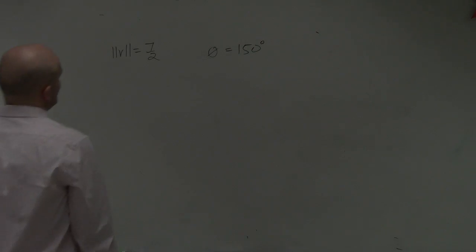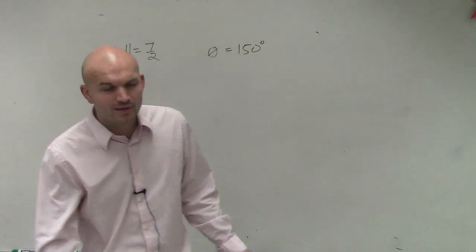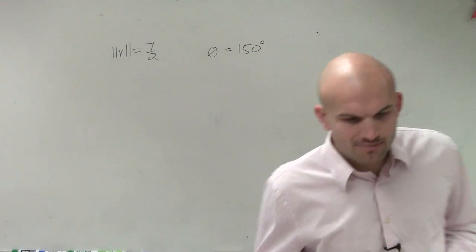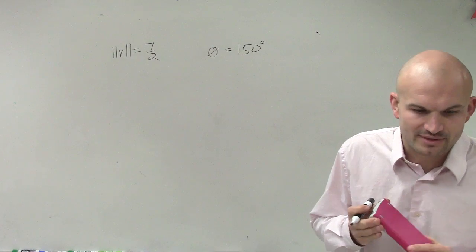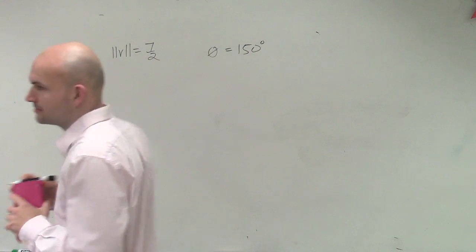The magnitude is 7½ and theta equals 150 degrees. The question is asking us to find the component form of v given its magnitude and the angle it makes with the positive x-axis.